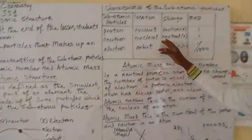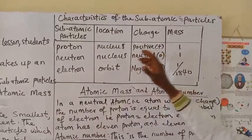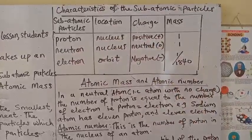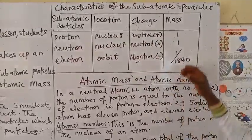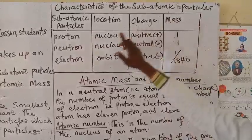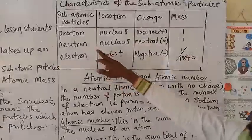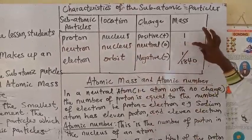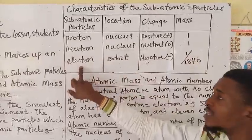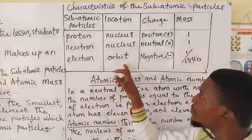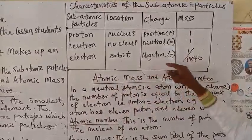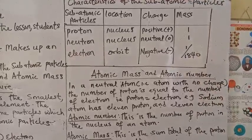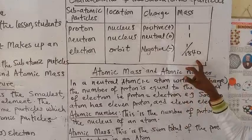Now let's look at the characteristics of the subatomic particles. The proton is located in the nucleus and it is positively charged, with a mass unit of 1. The neutron — just think of neutral — is also found in the nucleus; it is neutral, meaning it has no charge, and its mass is also 1 unit. The electron is found on the orbit; it is negatively charged and has a mass of 1 over 1840, which gives something like 0.000 — so it has the smallest mass unit.